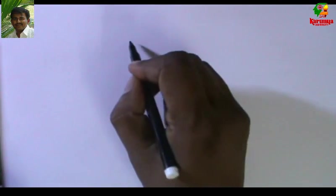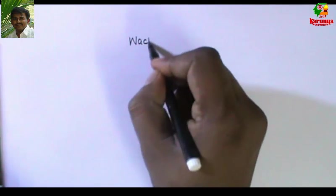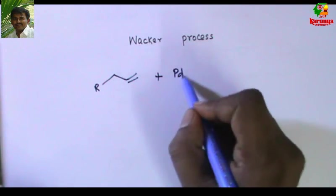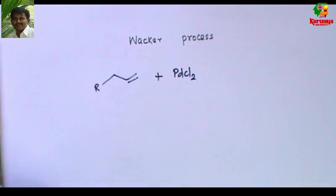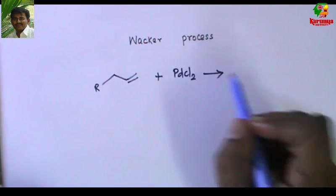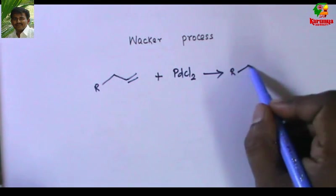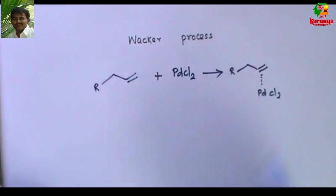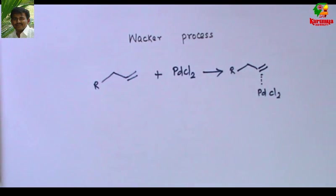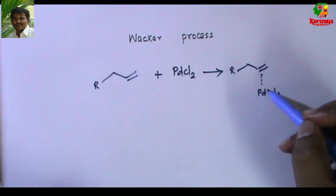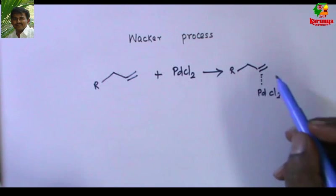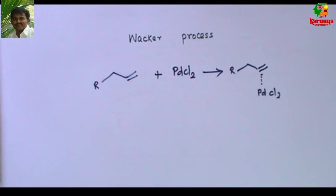You may be familiar with the Wacker process. In this process, an alkene is treated with palladium chloride. Palladium chloride coordinates to the alkene to give a complex, and the double bond interacts with palladium chloride. Since it is a non-symmetrical olefin, there are two possibilities.